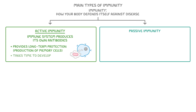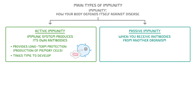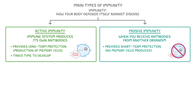Active immunity takes time to develop though, because the body needs to learn how to fight the pathogen first. On the other hand, passive immunity is when you receive antibodies from another organism instead of producing them yourself. This only provides short-term protection though, because no memory cells are produced, but this protection is provided immediately.